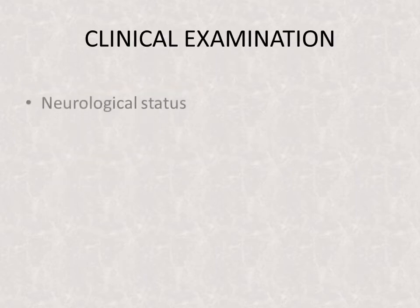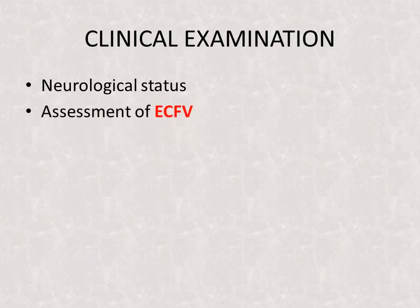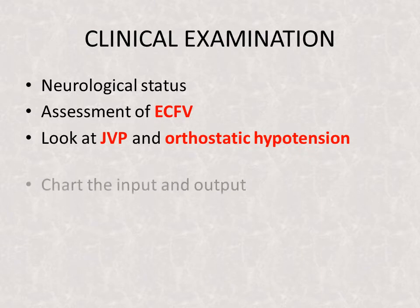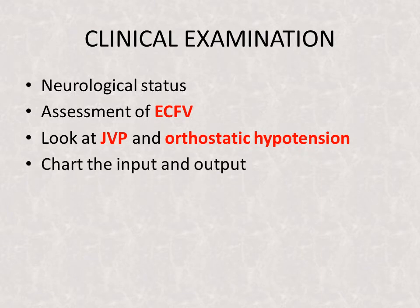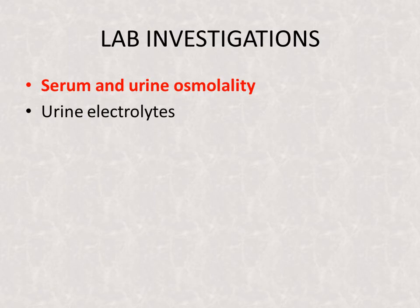On clinical examination, look for the neurological status and assess the extracellular fluid volume. This can be done by checking JVP and looking for orthostatic hypotension. Chart the input and output to measure ongoing losses. Lab investigations include serum and urine osmolality, and urinary electrolytes.